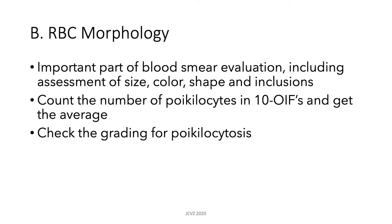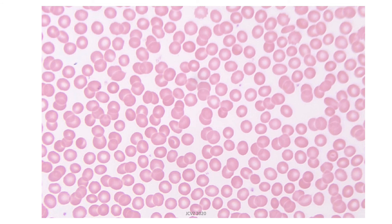Let's now move on to RBC morphology evaluation, an important part of blood smear evaluation. This includes the assessment of size, color, shape, and inclusions of your RBCs. To perform an RBC morphology evaluation, count the number of poikilocytes, or abnormal RBC shapes, in 10 oil immersion fields and get the average, then use a grading system for poikilocytosis. In this figure, you can see that most red blood cells are normal — they are round and all have a uniform central pallor about one-third the size of the cell.